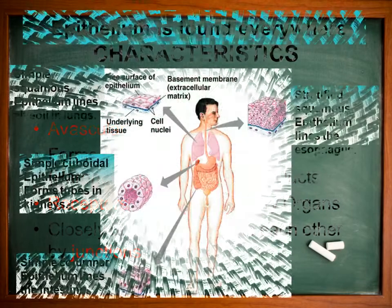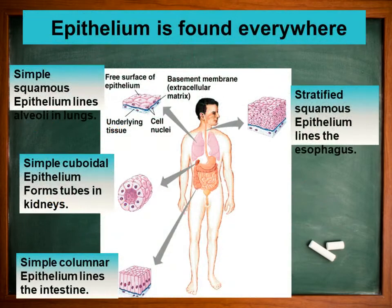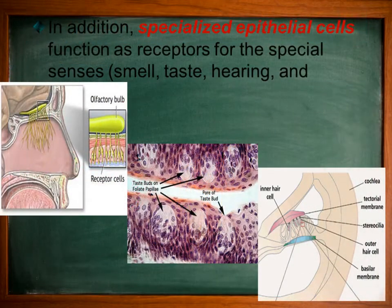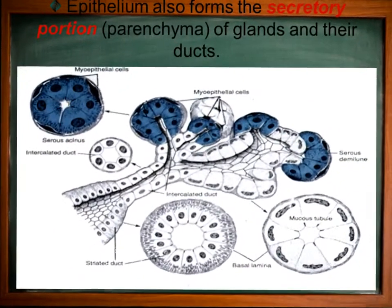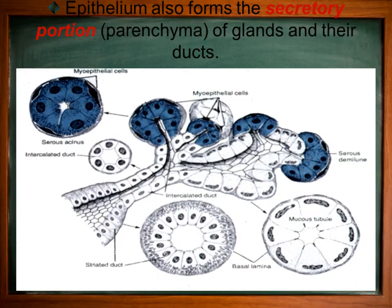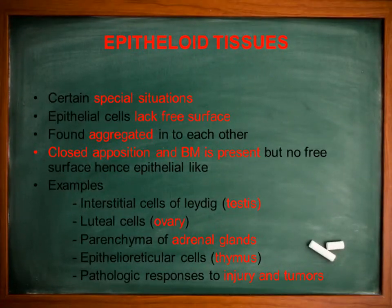Urea: blood urea decreases; normal is between 20 to 40 milligrams. Cholesterol: serum cholesterol decreases; normal is between 150 to 240 milligrams.